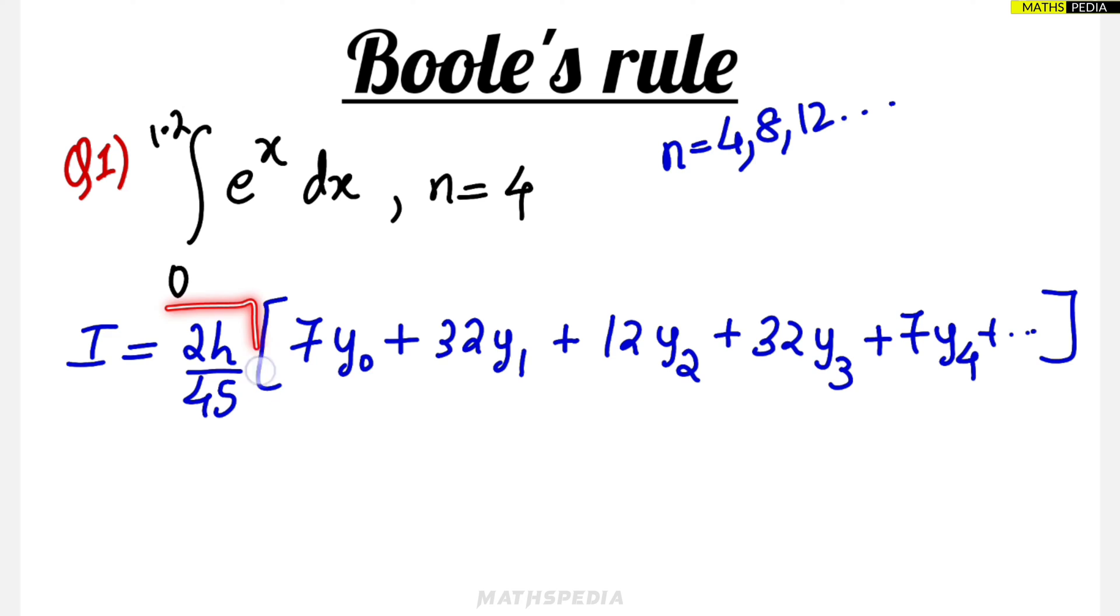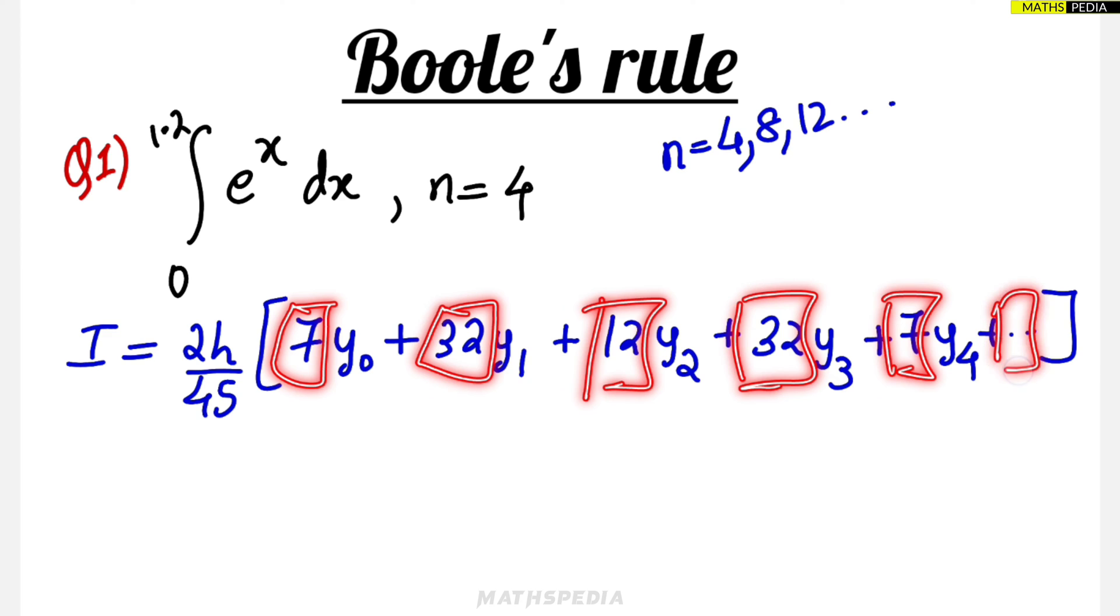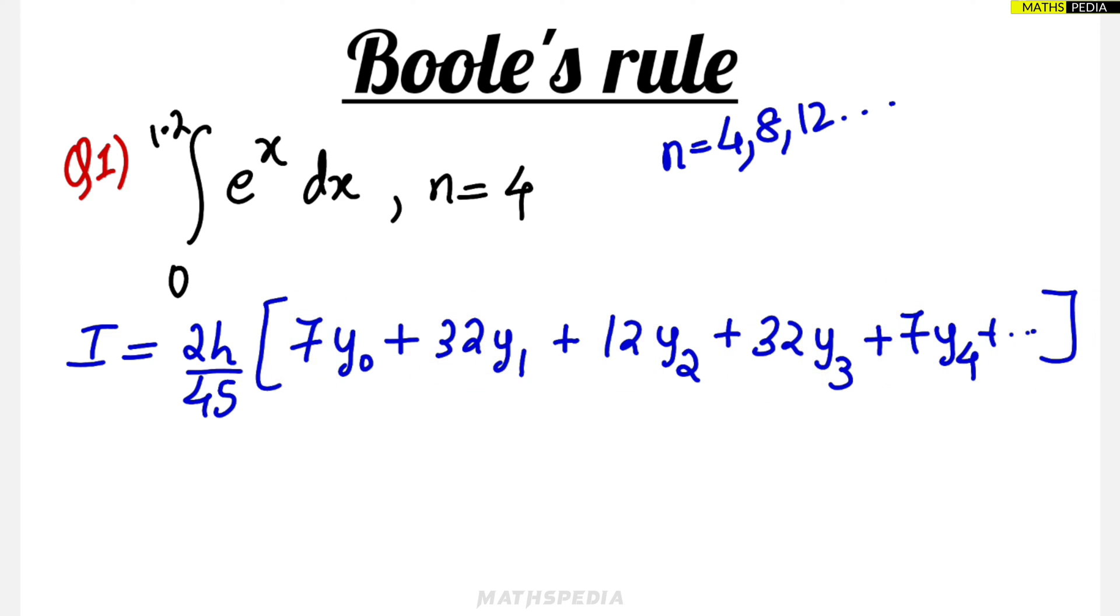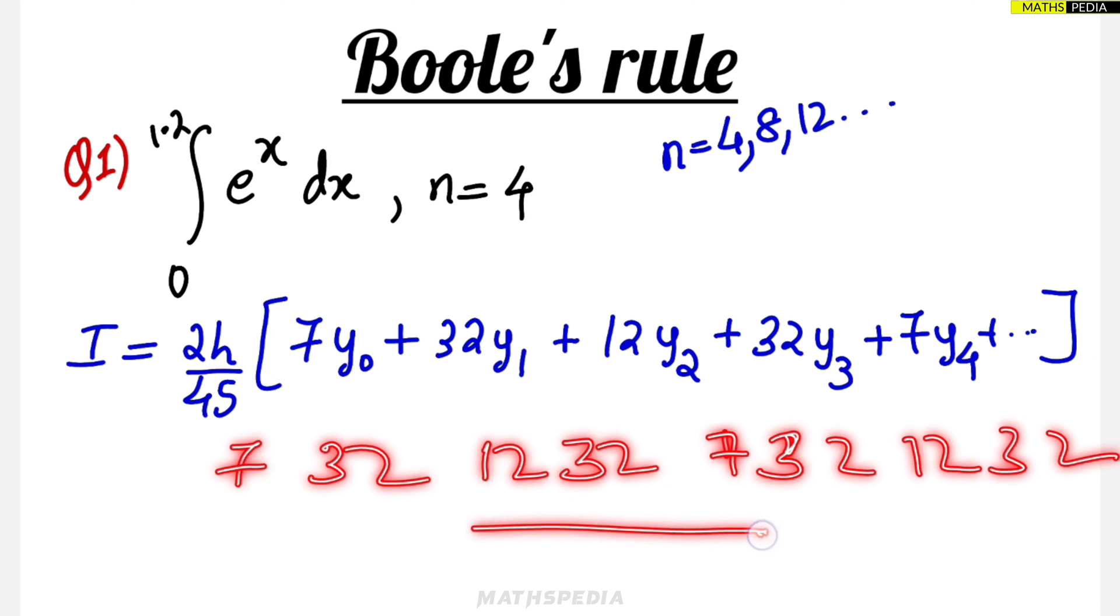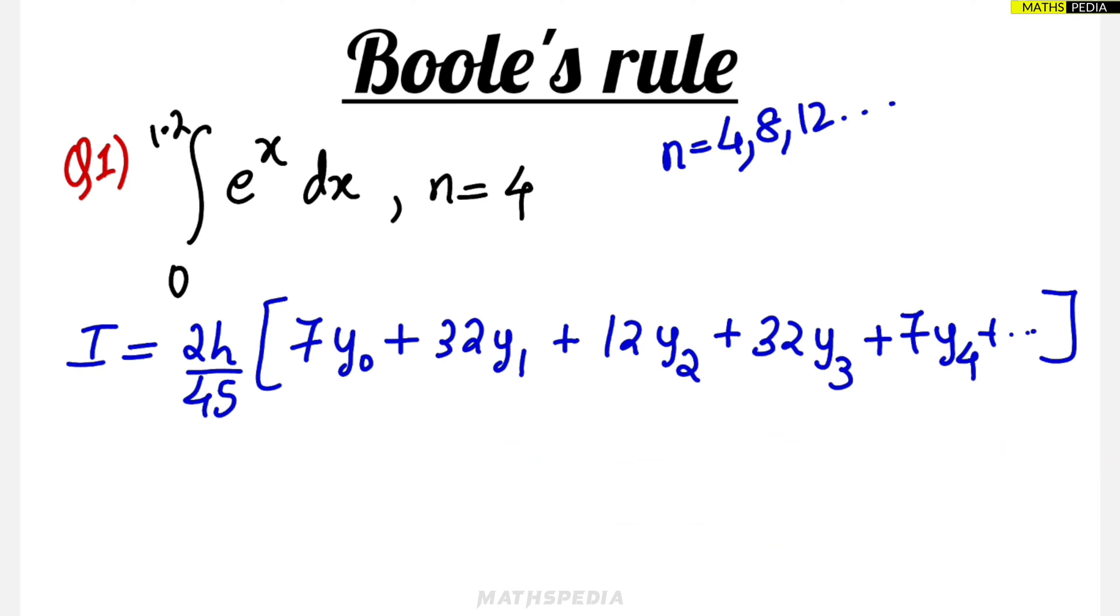Here's how to remember this formula: see, 2h by 45 you have to remember, and rest all terms - y₀, y₁, y₂, y₃, y₄ - you keep on writing. The coefficients are 7, 32, 12, 32, 7, 32, 12, 32, 12, 32. So what is the pattern here? 7, 32, 12, 32 - that is the pattern you have to follow. You can find your own way to remember the formula.